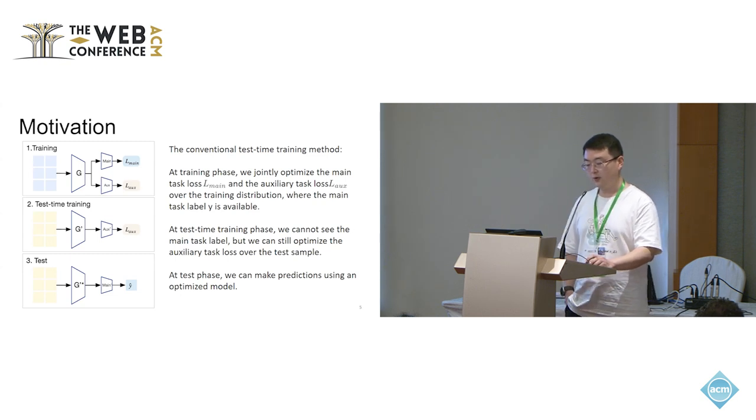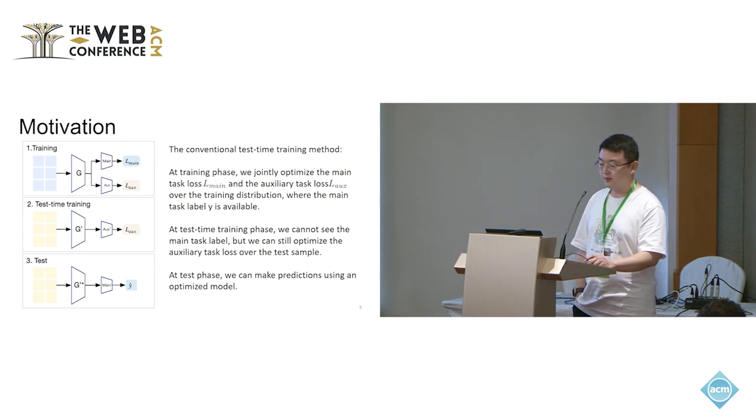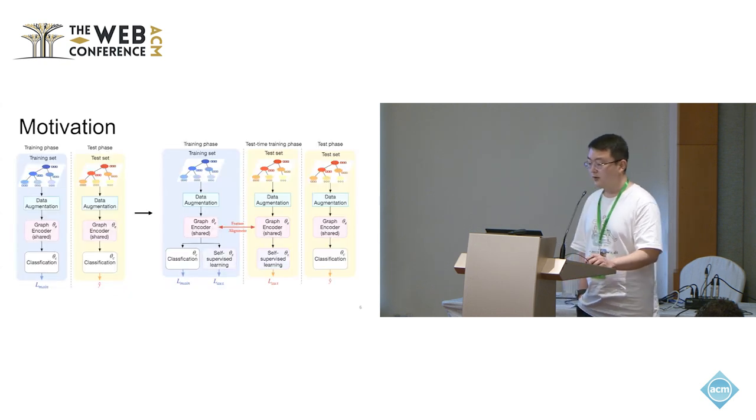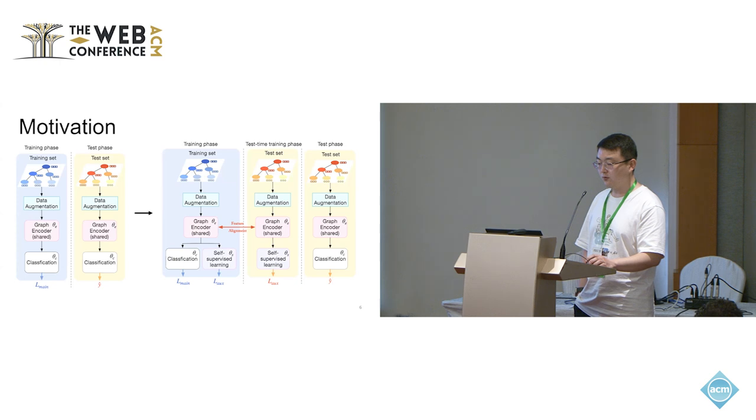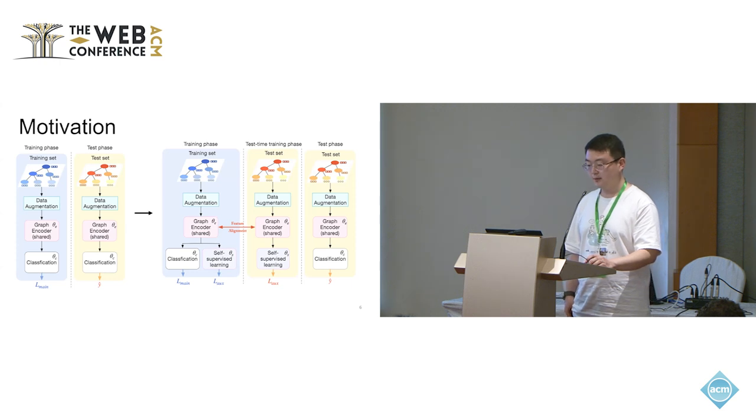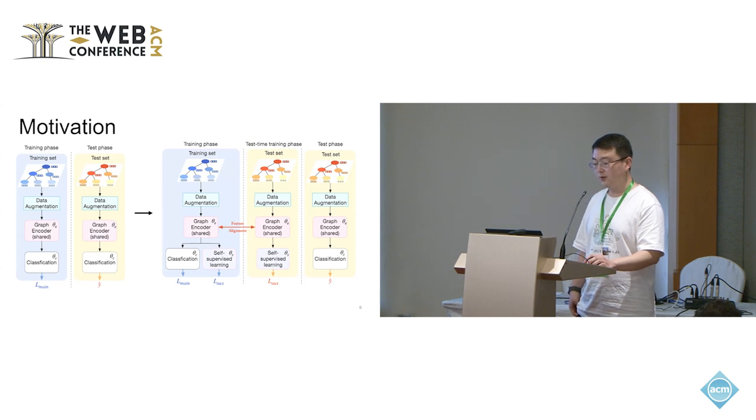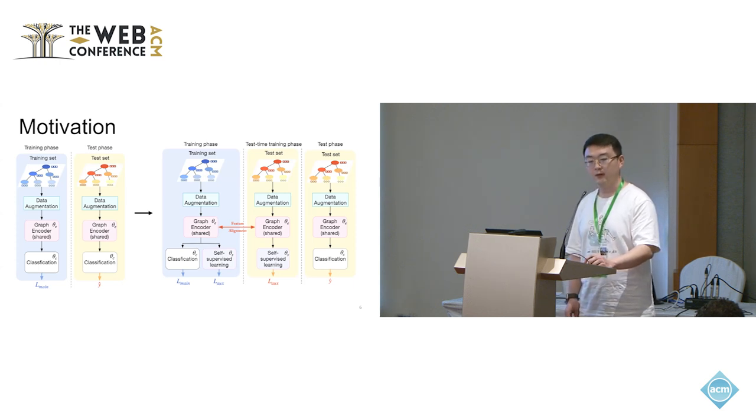In our paper, we try to incorporate test time training into rumor detection and propose the test time training for rumor detection, T3RD. We enhance the detection model by incorporating test time training into the paradigm. We introduce self-supervised learning as an auxiliary task during the training and test time training. To mitigate the distribution distortion in test time training, we introduce a feature alignment aiming to balance the knowledge derived from the training and the test set.